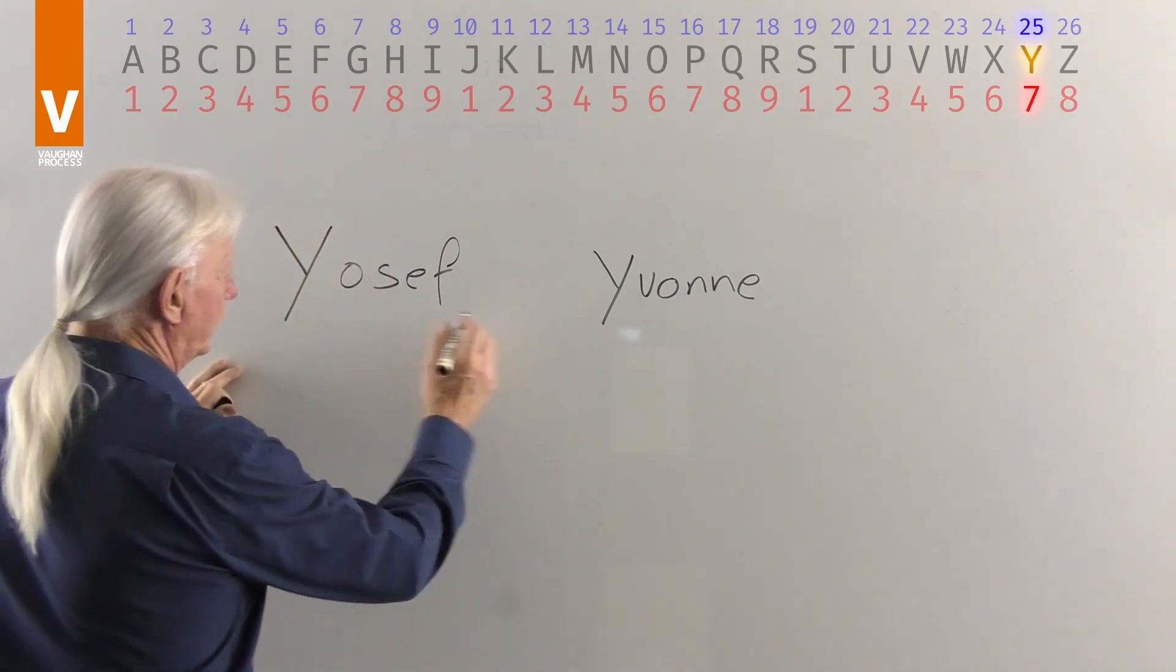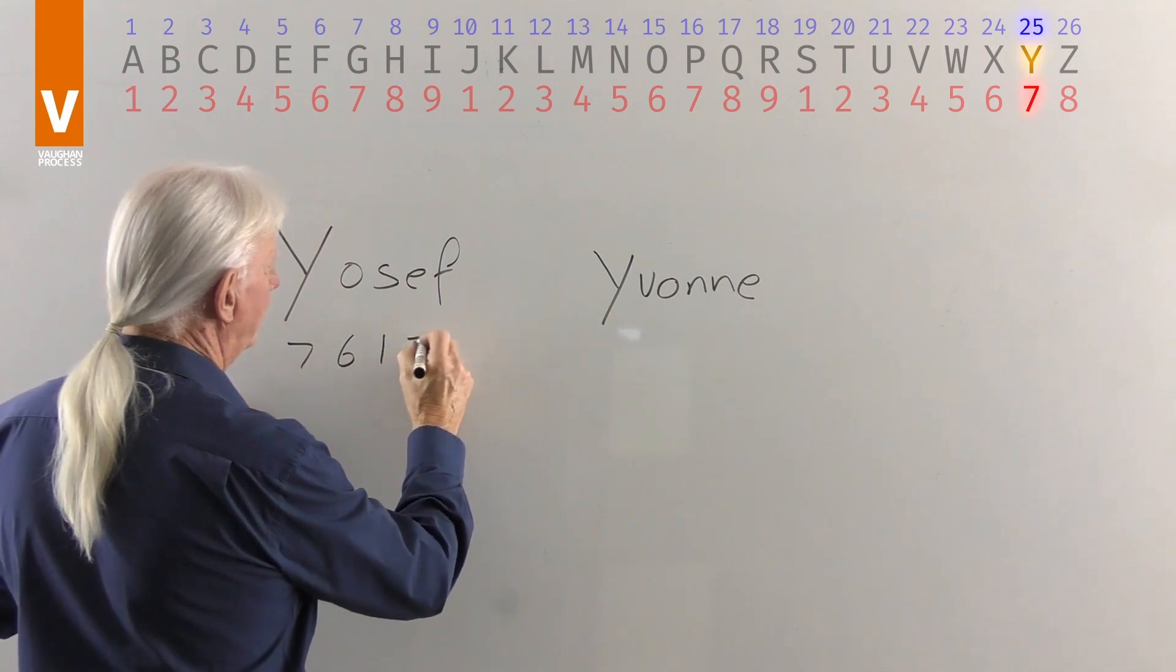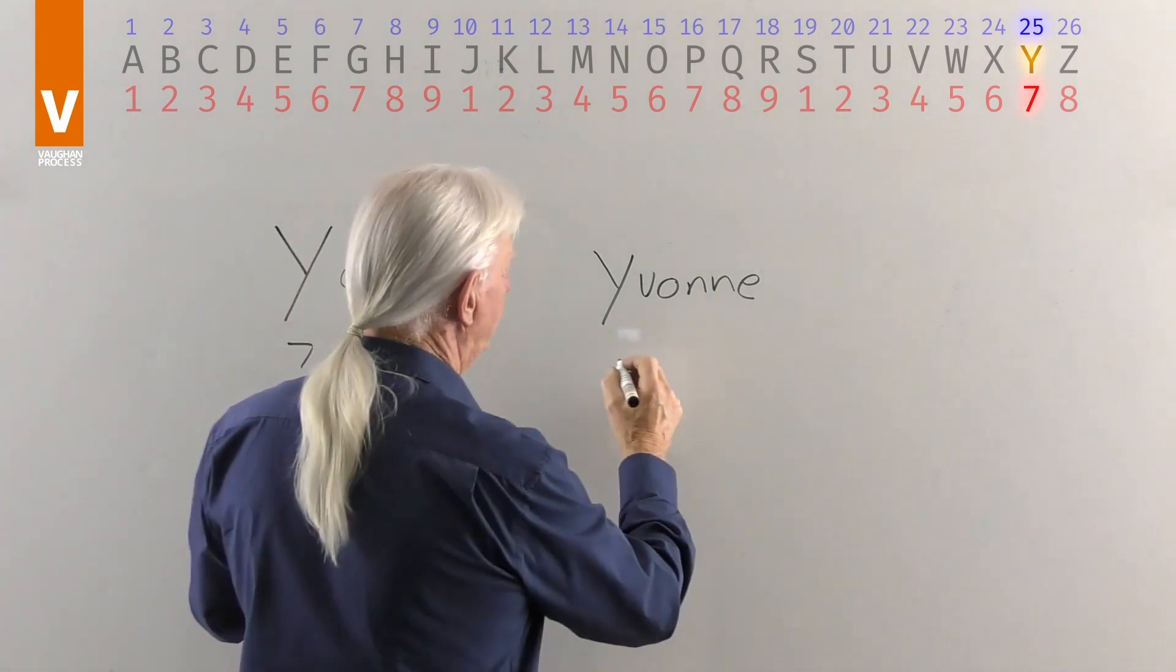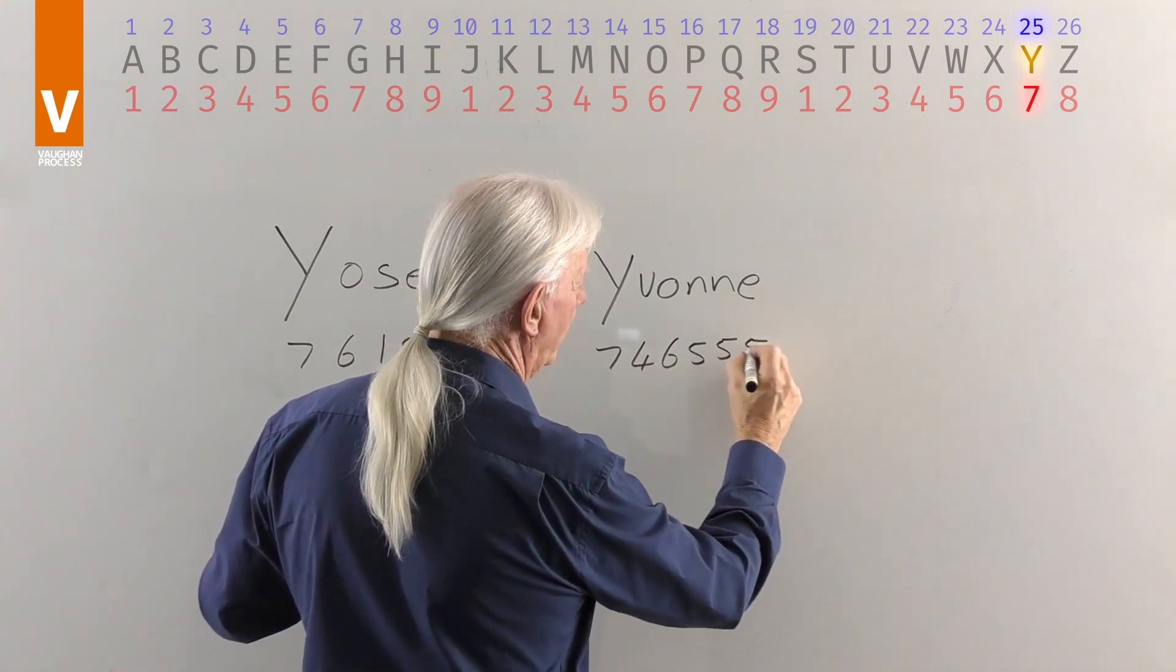So Yosef here, we've got 7, 6, 1, 5, and 6. And Yvonne, we've got 7, 4, 6, 5, 5, and 5.